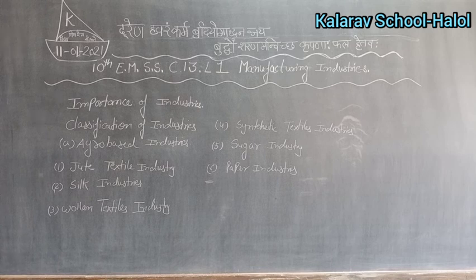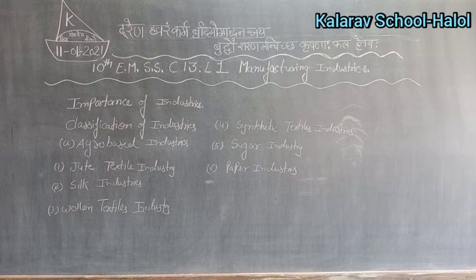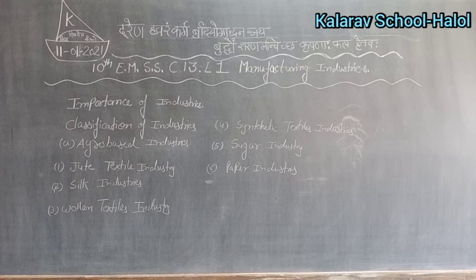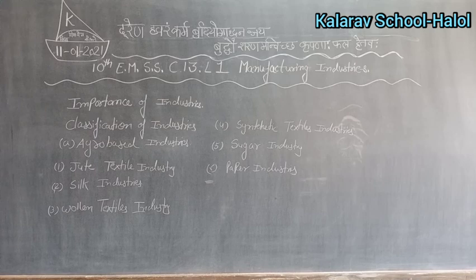Up to the 18th century India was ahead in ship building industry. Till 18th century, India alone produced 25% of the entire world's GDP — that much prosperity was there in the industrial sector in India till the end of the 18th century.